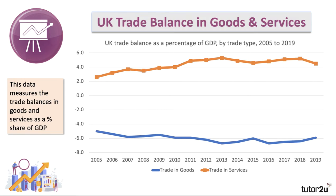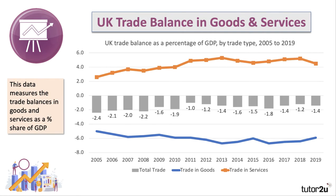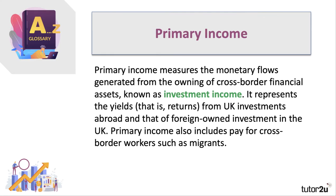Looking at UK data from the last video, this chart shows the UK trade balance in goods and services measured as a percentage of GDP. There is a trade deficit in goods shown by the blue line, and a trade deficit in services. Together they give a net trade in goods and services deficit of about one and a half percent of GDP — that is really half of the current account.